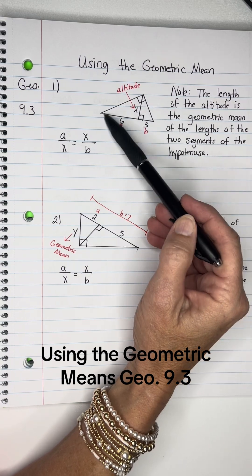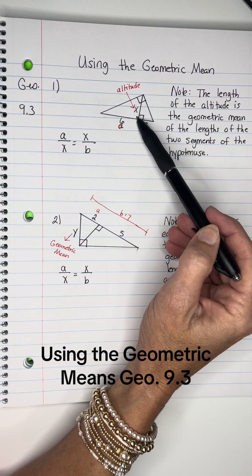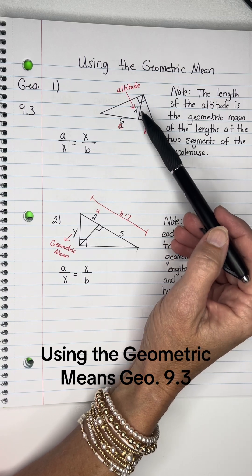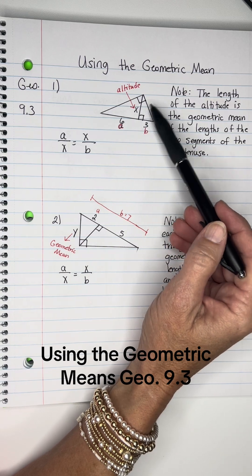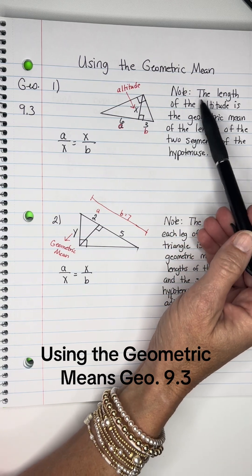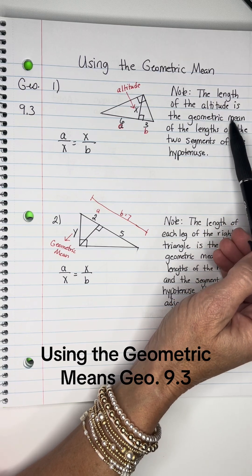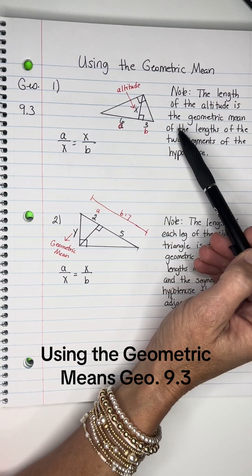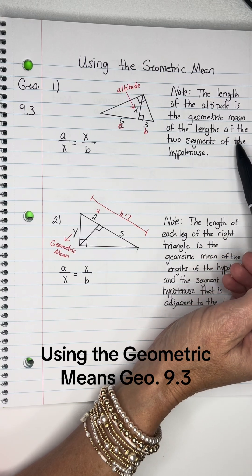Here's my large triangle. There's the altitude, which is perpendicular to the hypotenuse, and it says the length of the altitude is the geometric mean. So I get to use this formula of the length of the two segments of the hypotenuse.